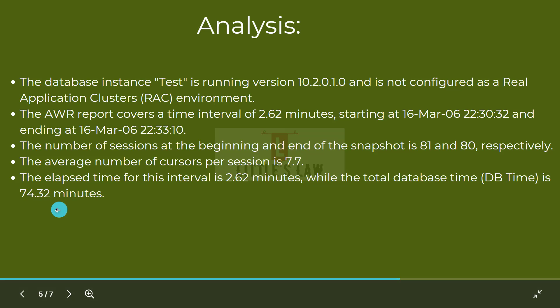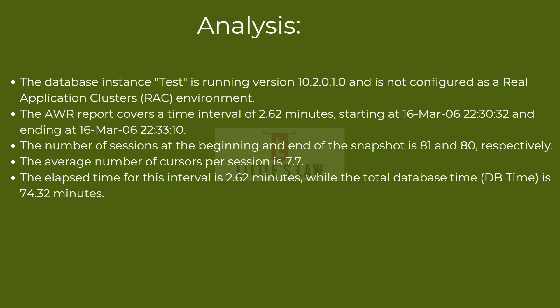The final line for analysis is the elapsed time. The elapsed time for this interval is 2.62 minutes, while the total database time is 74.32 minutes — highlighting two important time-related metrics. Elapsed time is the actual wall clock time that has passed between the start and end of the snapshot interval. Database time, or DB time, is the cumulative time spent by the database server processing user requests, which includes both CPU time and time spent waiting for resources. In this case, the total database time during the specified interval is 74.32 minutes, and DB time is a measure of the overall workload or demand on the database server.